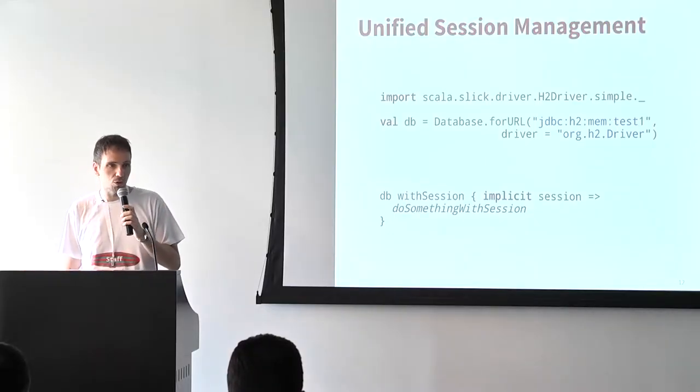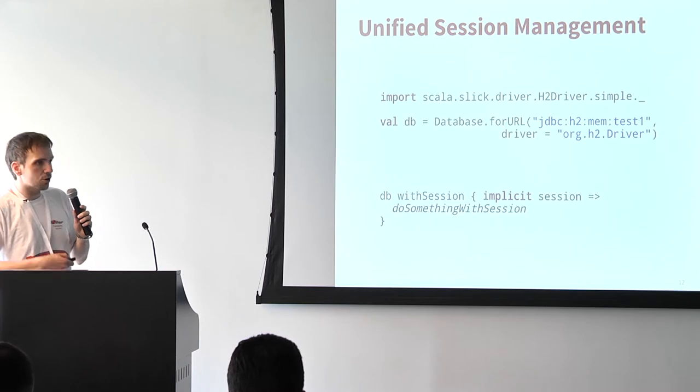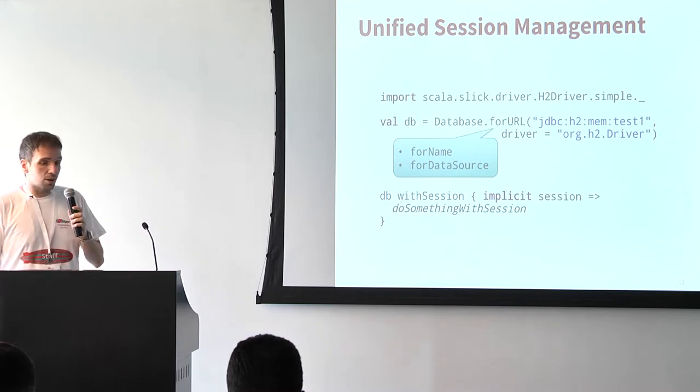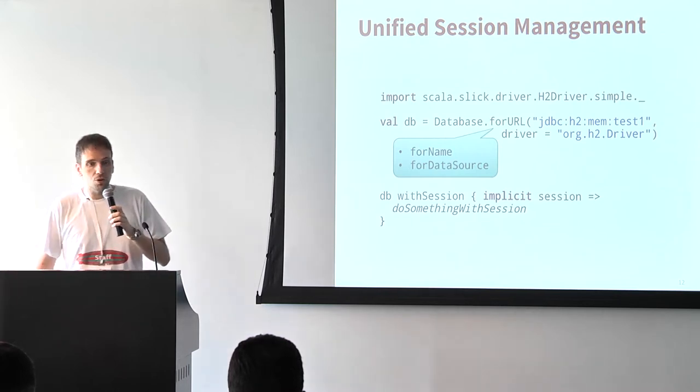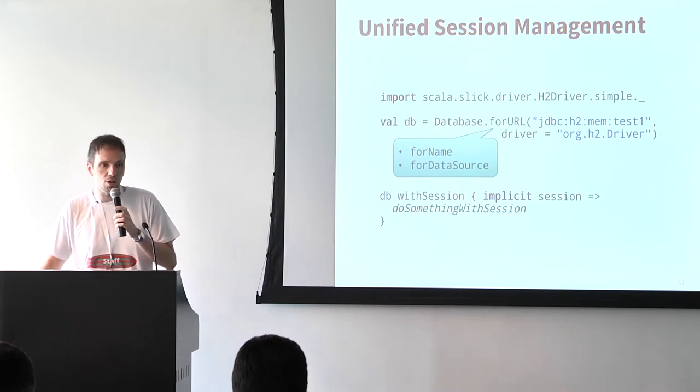Let's look at what you see first when writing Slick code — the session management. There's a simple import from the Slick drivers which gives you everything you need to work with the lifted embedding and connect to the database in the first place, so it's just one import. Then you create a database object — in the simplest case, it's `forURL`: just give it a JDBC URL and specify a driver. When running inside a container — some JEE container or a Play application — you use `forName` or `forDataSource`, giving it a data source object directly or a JNDI name.